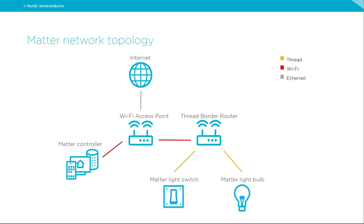To make communication possible, we need to add a Thread border router that will route traffic between Wi-Fi and Thread interfaces. The light switch is going to be able to control a Matter light bulb that is also a Thread device. The last problem is that the light switch doesn't have any user interface besides a single button, so the user cannot tell the device which light bulb it should control.